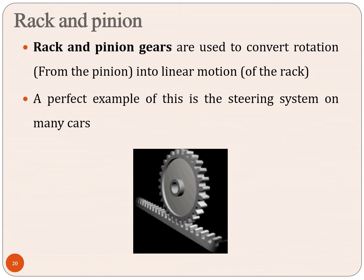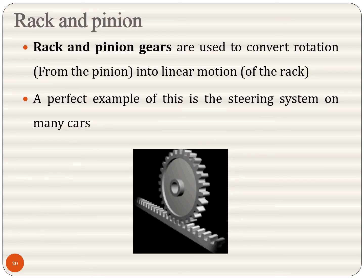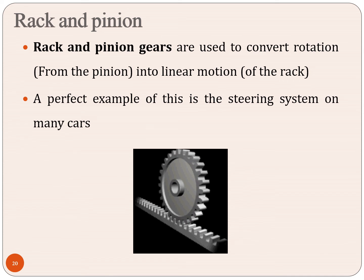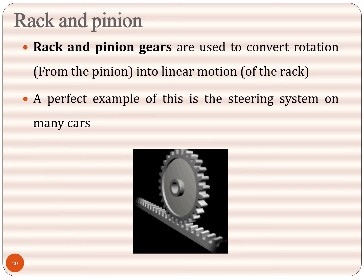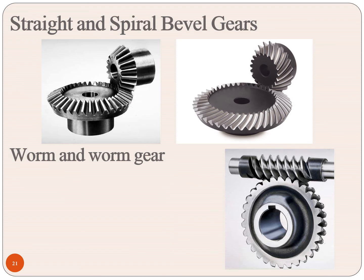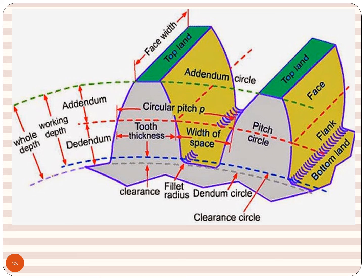This is the rack and pinion arrangement, used to convert rotary motion into linear motion — look at the animation showing the steering system in cars. This is a straight bevel gear for power transmission through 90 degrees. This is the terminology of the spur gear, and with this we will stop and go to the next topic.